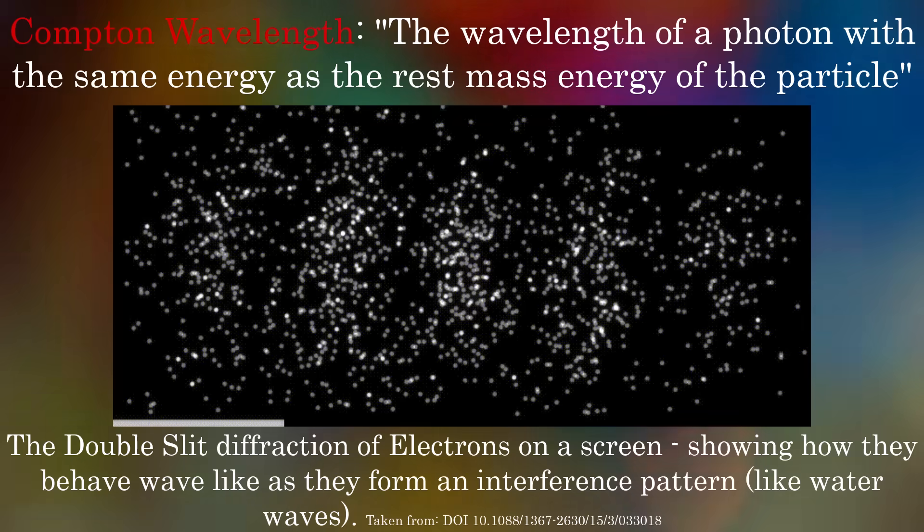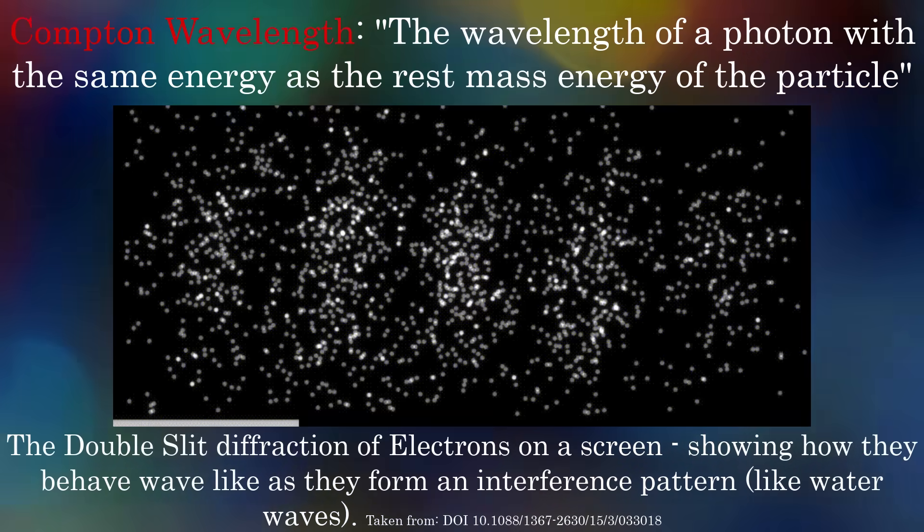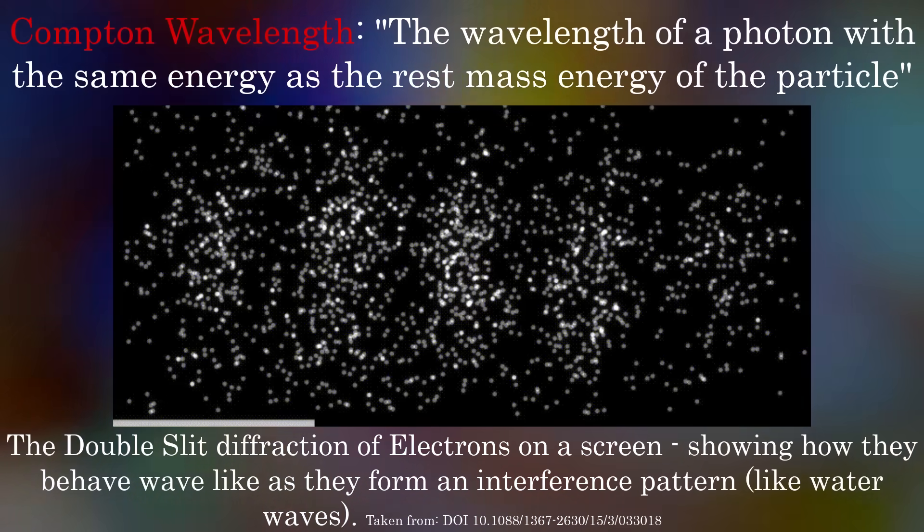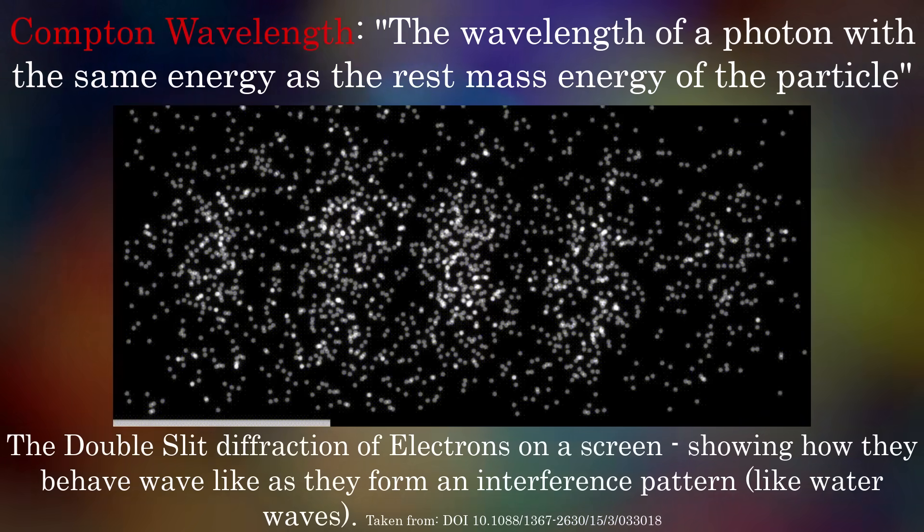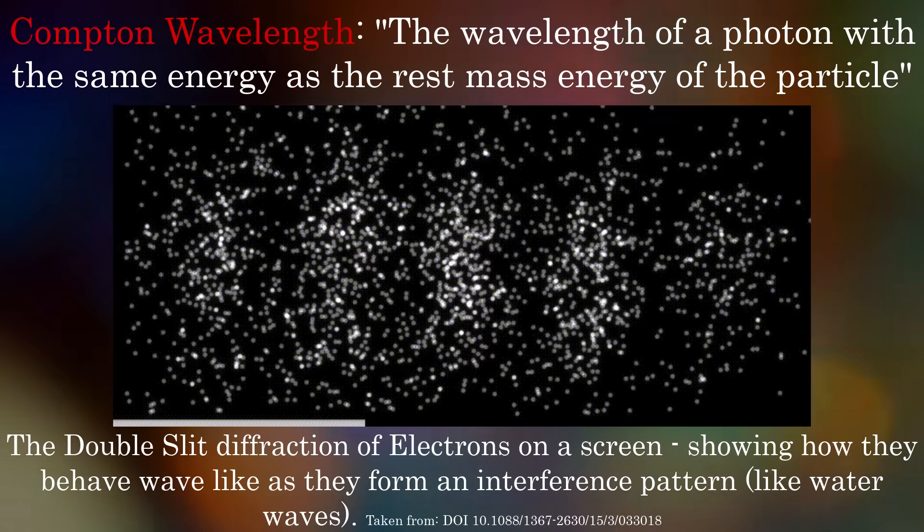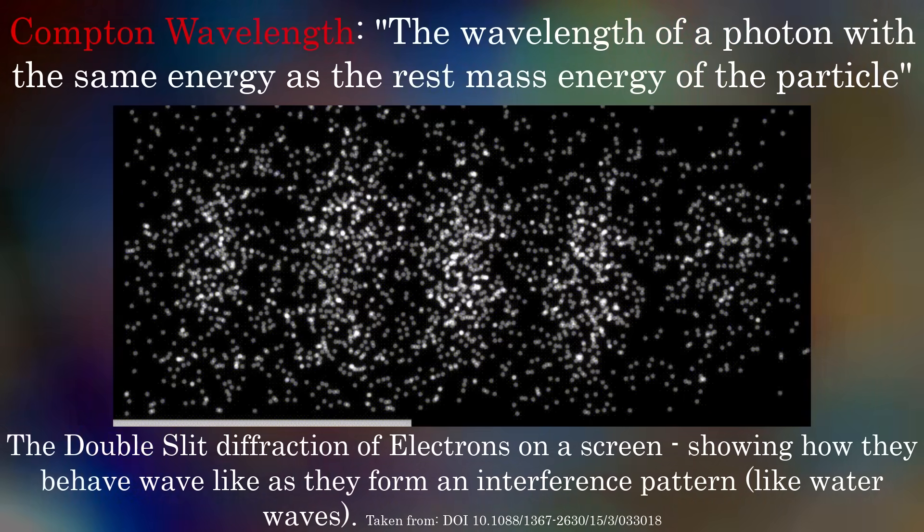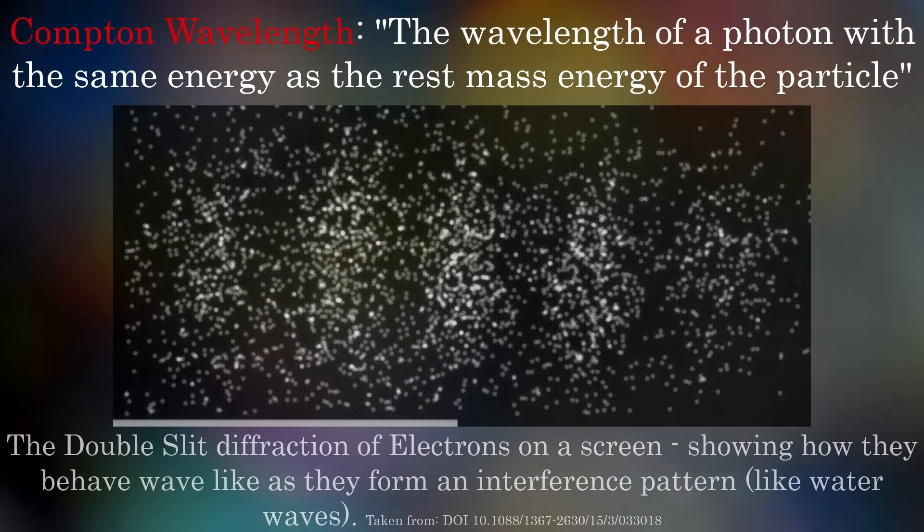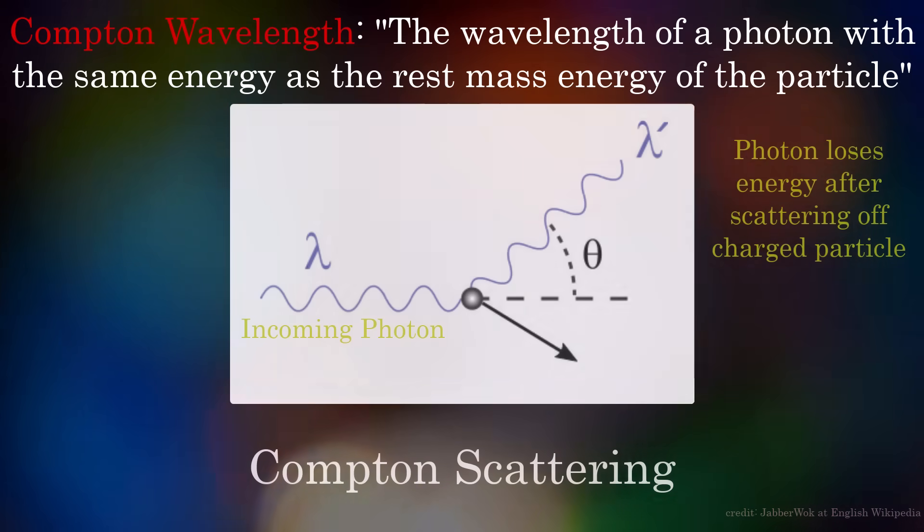For example, violet light having more energy than red light. So if we consider the rest mass of a particle and convert that to an associated rest mass energy, we can then imagine a photon of light with such energy and calculate its wavelength. This is the Compton wavelength, and has physical significance in Compton scattering,